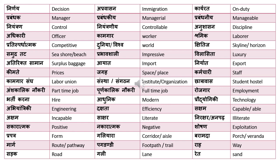'Takshar' means literate, and 'nirakshar' means illiterate. Similarly, another synonym for illiterate is 'anpad.' 'Sakaratmak' means positive and 'nakaratmak' means negative. 'Shoshan' means exploitation. 'Prapatra' means form.